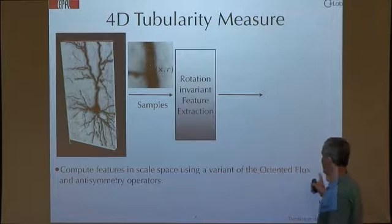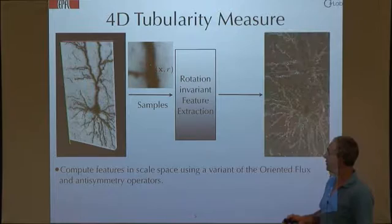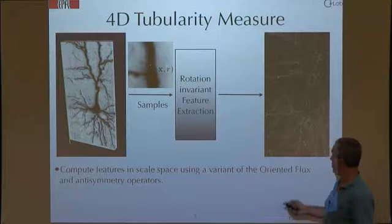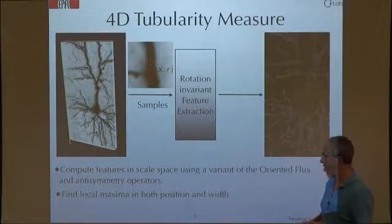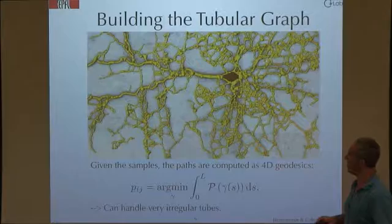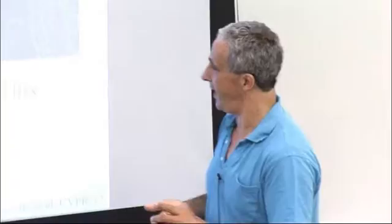The first step is to run a filter called the Oriented Flux Filter, designed to respond maximally at pixels that are in the center of a tube. You run this for several scales because these things have width, so you generate a 4D volume — the response at every location for a range of possible widths — and you look for local maxima in this 4D volume. The volume is 3D initially; you run the filter for several possible widths and then you get a 4D volume. Everything we do is on 3D volumes, except debugging.